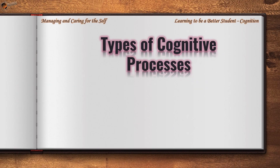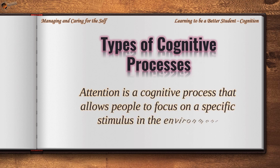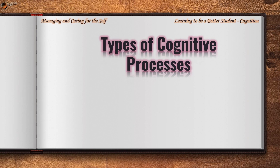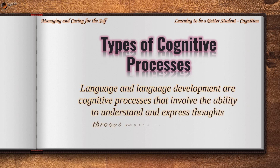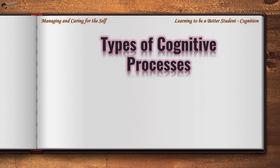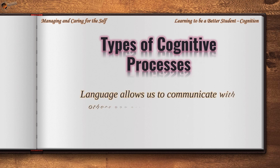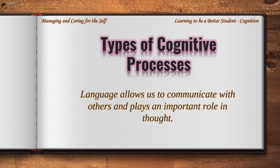Attention is a cognitive process that allows people to focus on a specific stimulus in the environment. Language and language development are cognitive processes that involve the ability to understand and express thoughts through spoken and written words. Language allows us to communicate with others and plays an important role in thought.